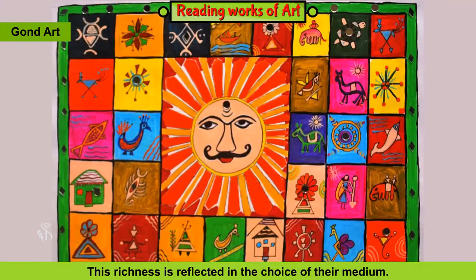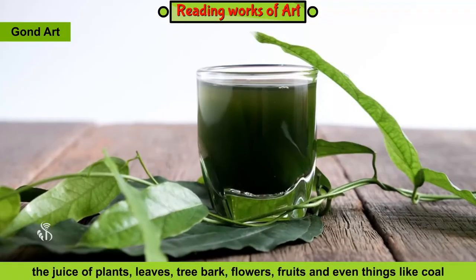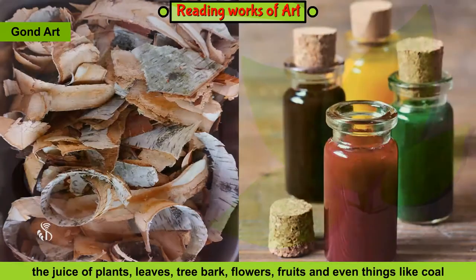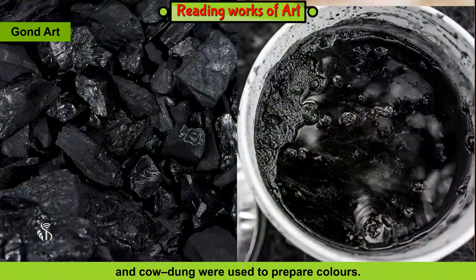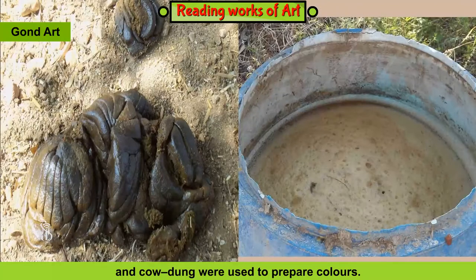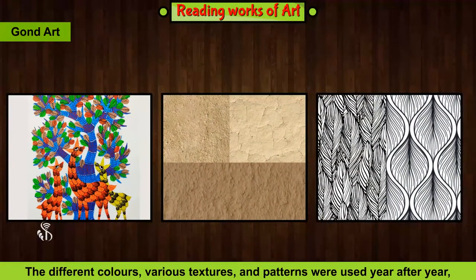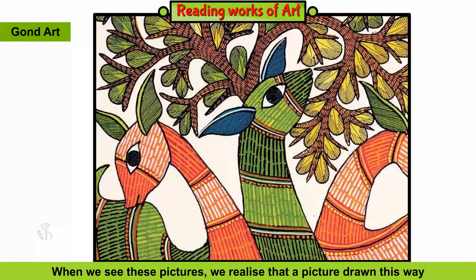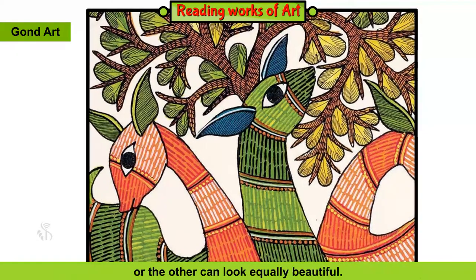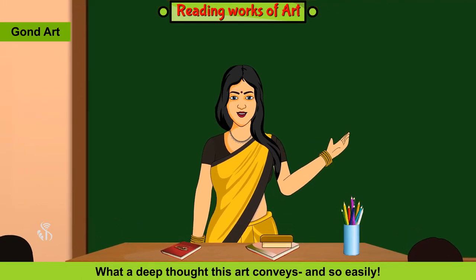This richness is reflected in the choice of their medium. In the olden days, several things in nature such as soils of different shades, the juice of plants, leaves, tree bark, flowers, fruits, and even things like coal and cow dung were used to prepare colours. The different colours, various textures and patterns were used year after year, lending a simplicity to the art. When we see these pictures, we realise that a picture drawn this way or the other can look equally beautiful. What a deep thought this art conveys and so easily.